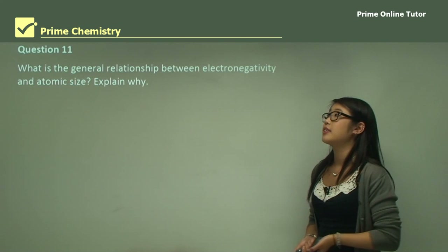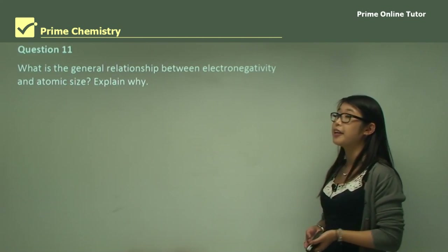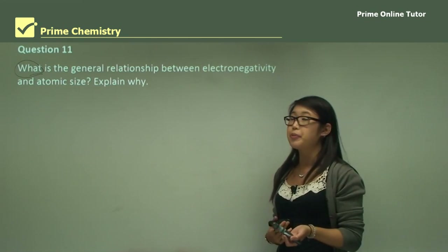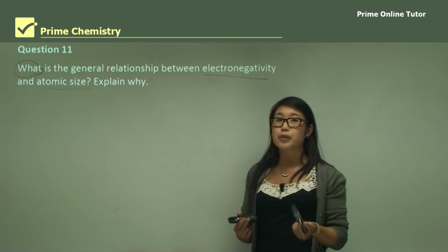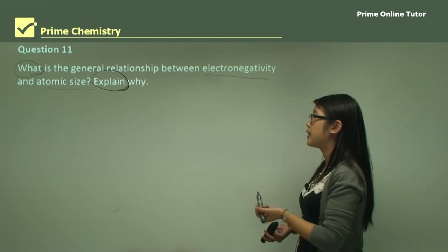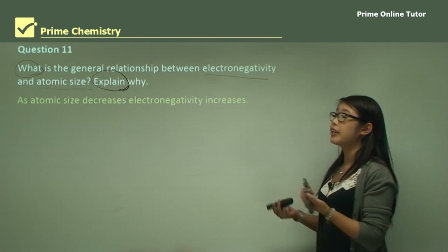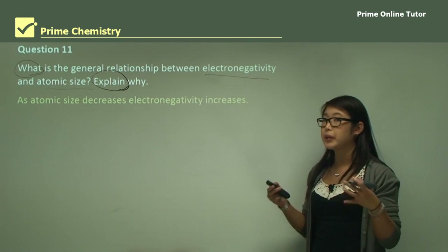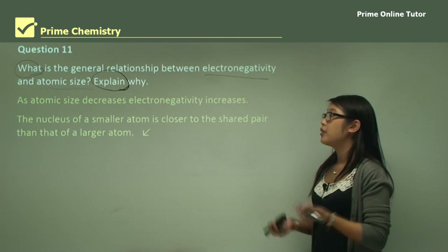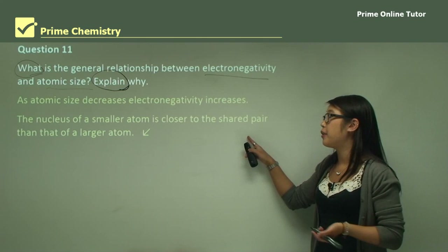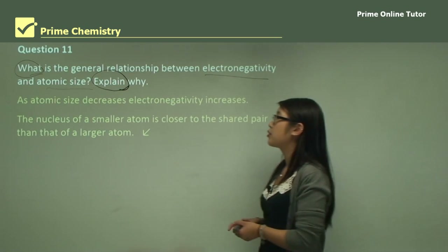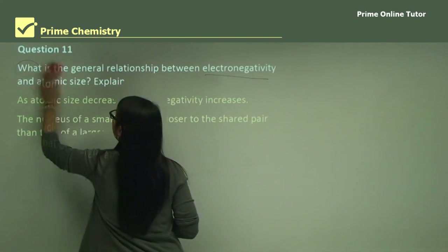Question 11 asks: what is the general relationship between electronegativity and atomic size, and explain why. As the atomic size decreases, electronegativity increases, because a shared pair of electrons is really far away from the positively charged nucleus in a large atom, and therefore there's not enough attraction to pull them in. The nucleus of a smaller atom is closer to the shared pair of electrons because there are not as many shells, which is how we know that atomic size is related to electronegativity.